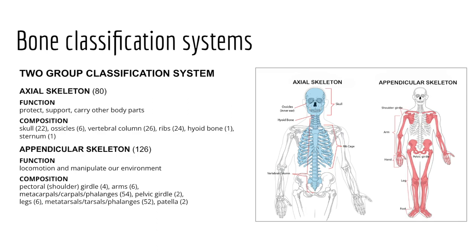The skeleton can be divided into two functional units. The axial skeleton — shown in blue — consists of about 80 bones making up the cranium, neck, and trunk including the sternum and ribcage; it functions to protect, support, and carry other body parts. The appendicular skeleton consists of about 126 bones of the limbs, making up the pectoral and pelvic girdles and appendages, functioning primarily for locomotion and environmental manipulation.